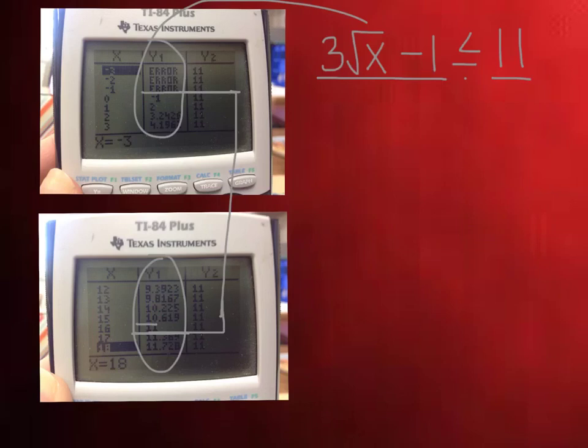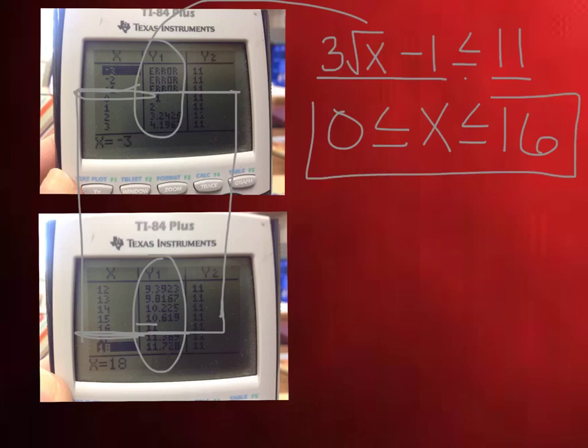So this does count. So that would correspond to all of these x's that are between 0 and 16. So we would say 0 is less than or equal to x is less than or equal to 16, and that's how you'll give me your answer.